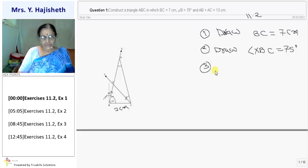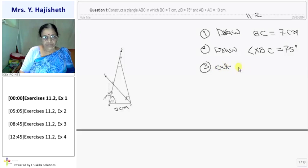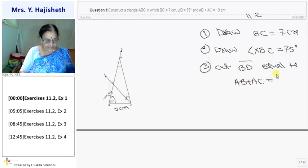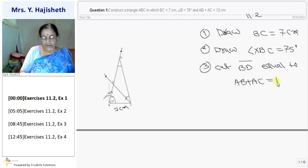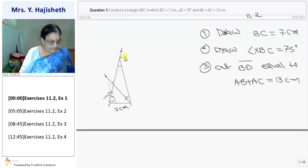If I draw a line segment BD, cut BD, line segment BD equal to AB plus AC. What is AB plus AC equal to, given as? Is equal to 13 cm. I draw this BD equal to 13 cm. Now, what to do? After getting BD is 13 cm, now I will construct angle.